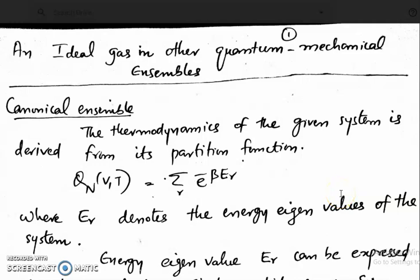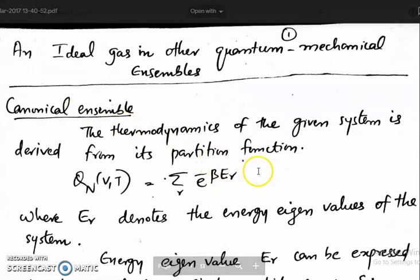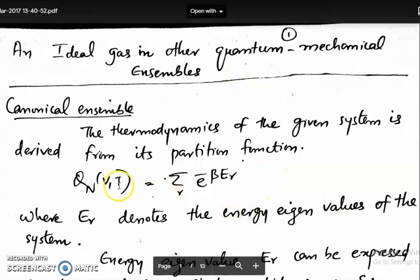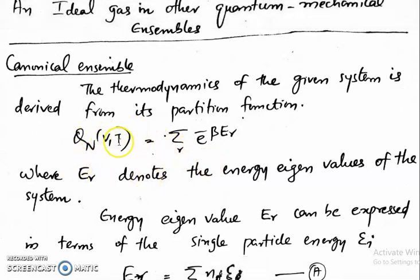So far we were discussing the ideal gas in the microcanonical ensemble. Next we have to see the ideal gas in canonical and grand canonical ensemble. The thermodynamics in the case of canonical ensemble is entirely dependent on the partition function. The partition function is Q(N,V,T) equal to sigma e to the power minus beta E_r.